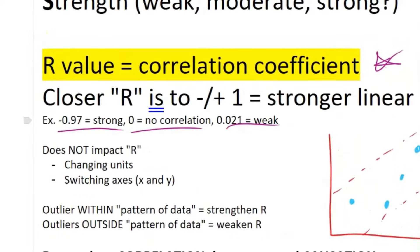A couple things that do not impact your correlation coefficient: changing your units, right? So if you multiplied everything by 100, it does not change your R value. Also, if you switch the x and y axis, that does not change your R value.